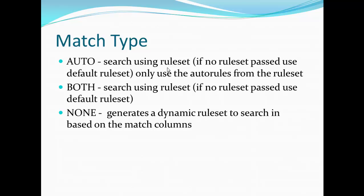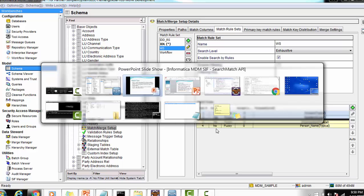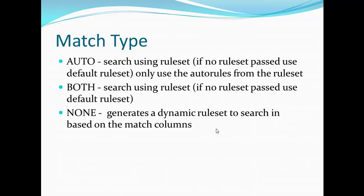Match type is a very important and required attribute in the Search Match query. There are three types of match type: first is ATTO, second is BOTH, and third is NONE. ATTO means it is used when you are doing the search match using the rule set, and within that rule set there are both ATTO as well as manual match rules. If you use match type ATTO, it uses only the ATTO match rules from the rule set.